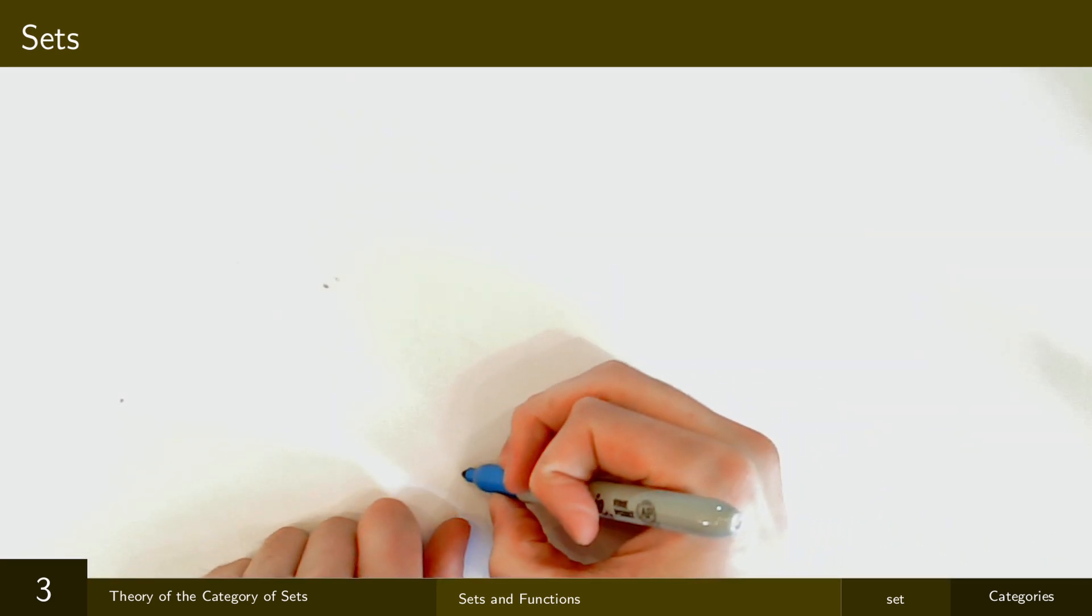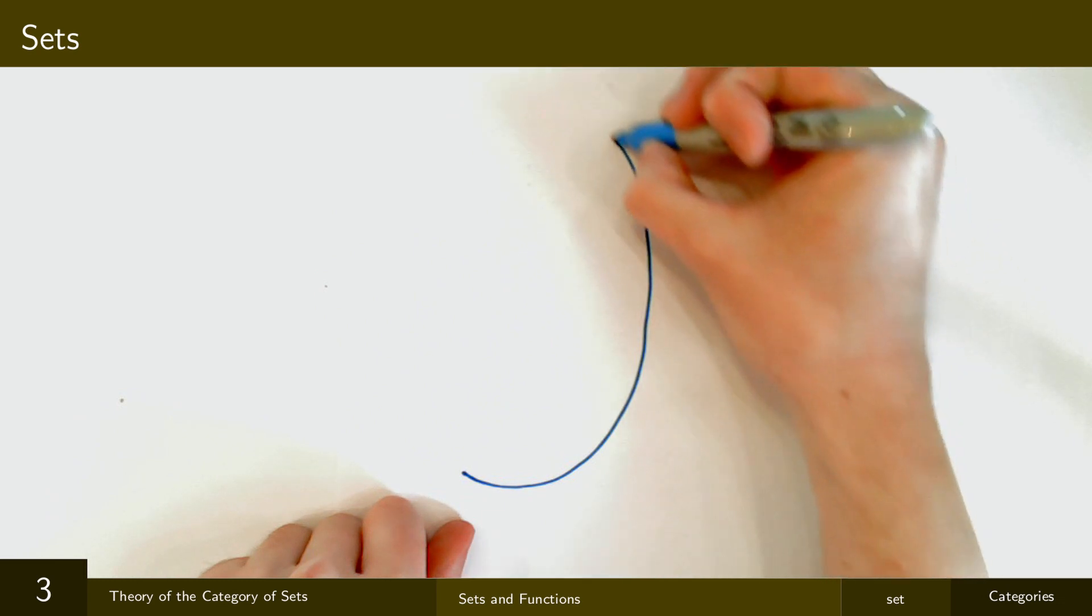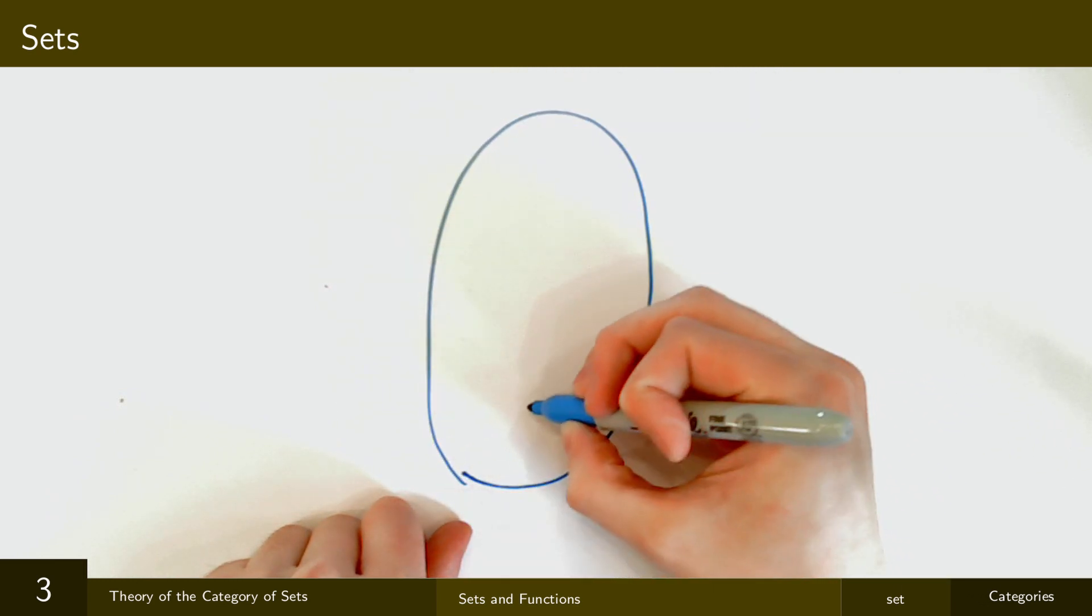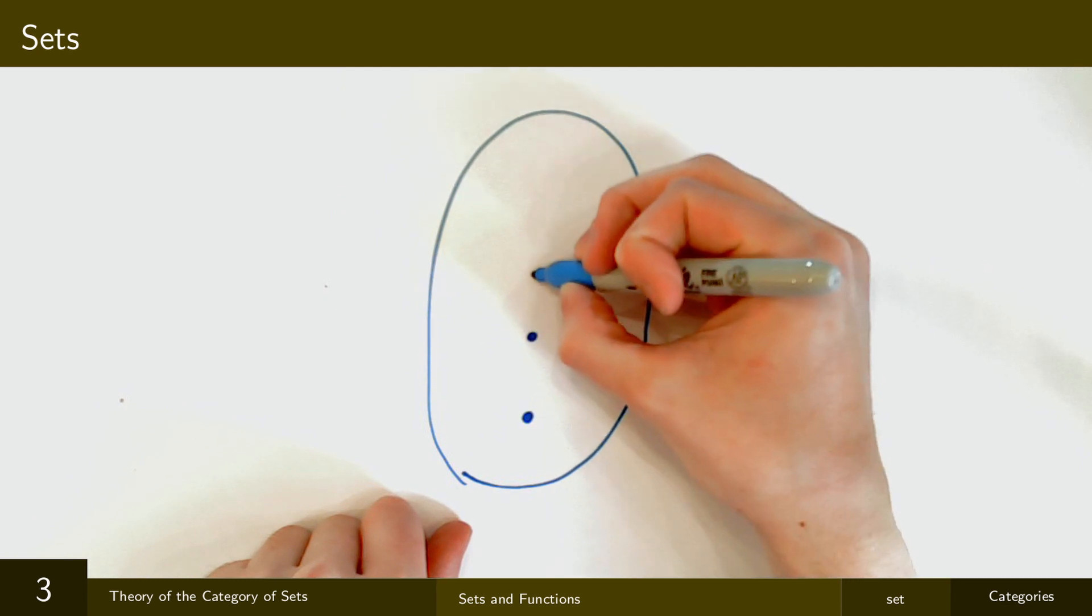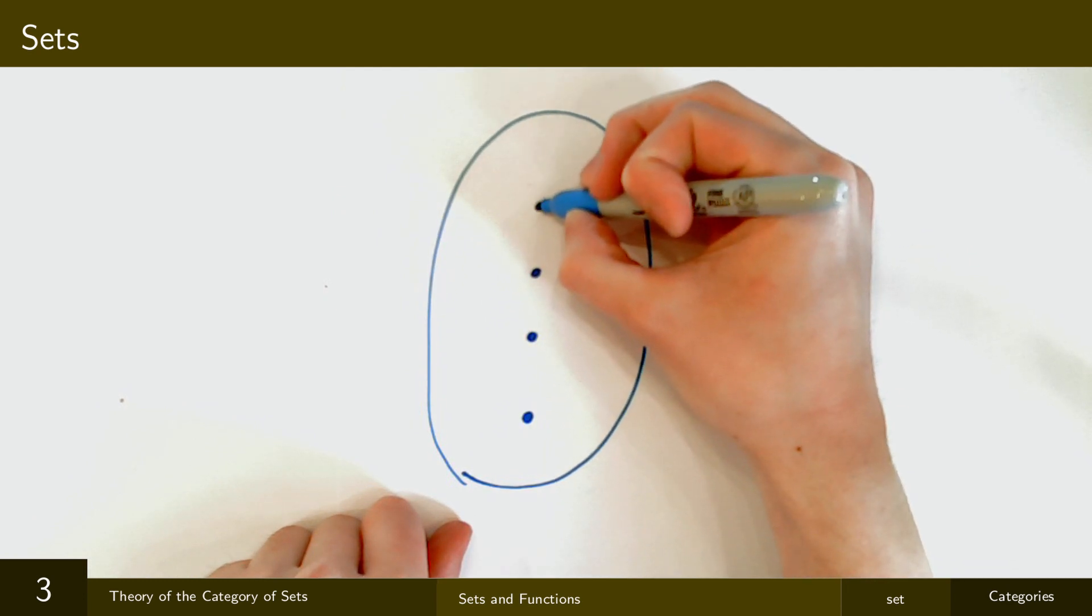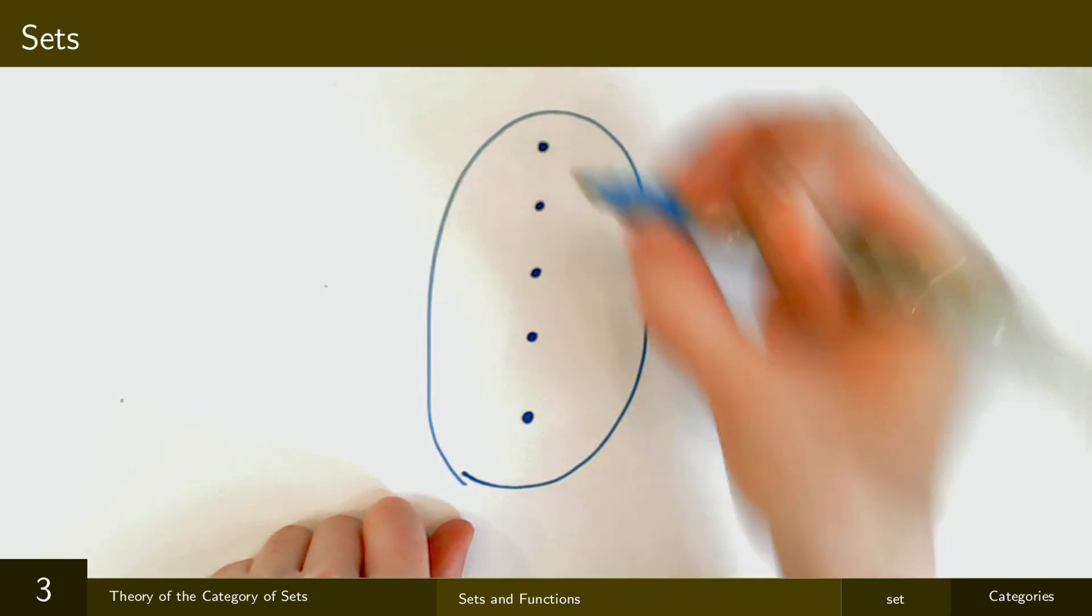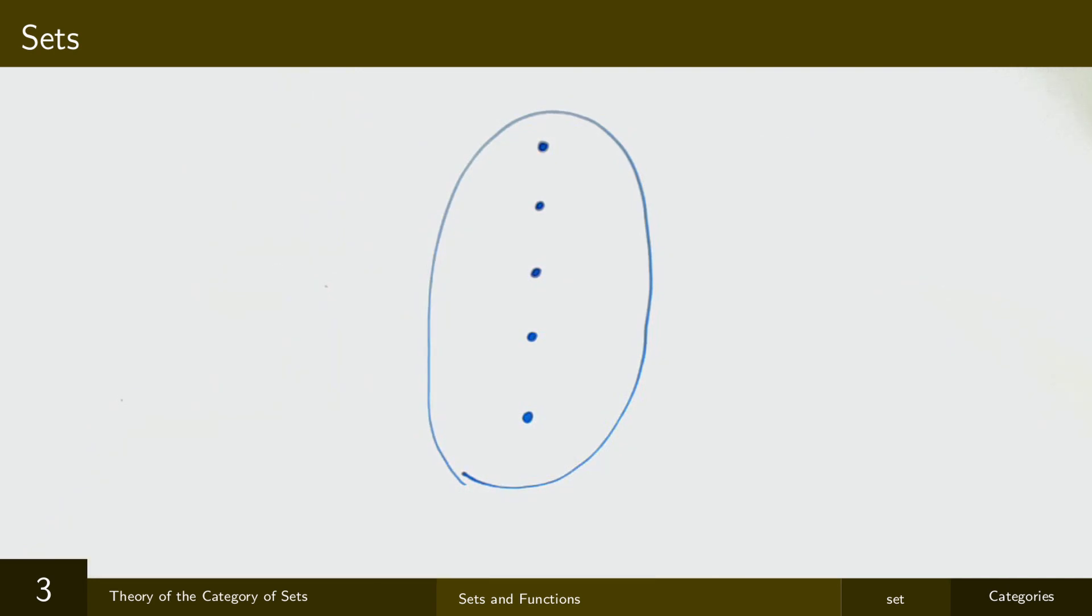So informally what a set is, is it's a collection of things. And these things can be numbers, symbols, words, vectors, cows, horses, pigs, whatever. And most importantly, the elements of a set can be other sets. So I can have a set containing a set. That'll be really important later.